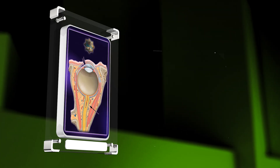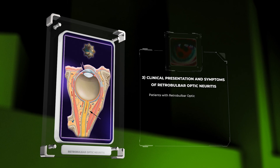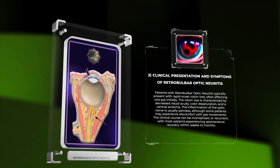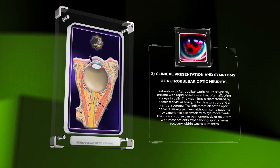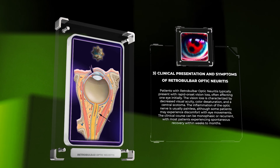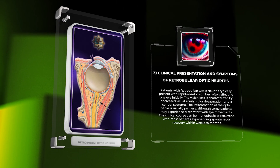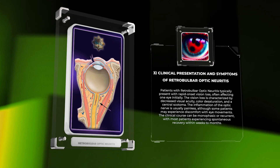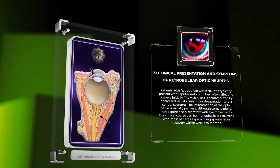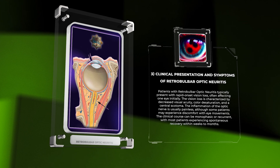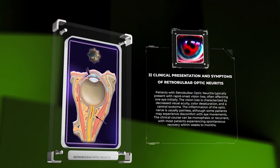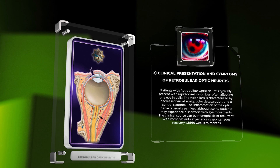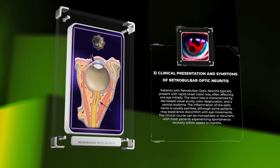Patients with retrobulbar optic neuritis typically present with rapid-onset vision loss, often affecting one eye initially. The vision loss is characterized by decreased visual acuity, color desaturation, and a central scotoma. The inflammation of the optic nerve is usually painless, although some patients may experience discomfort with eye movements. The clinical course can be monophasic or recurrent, with most patients experiencing spontaneous recovery within weeks to months.